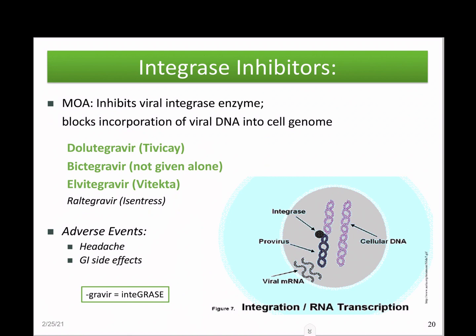Integrase inhibitors are perhaps the simplest drug class — they inhibit the viral integrase enzyme that clips the ends of viral DNA and inserts it into human genomic DNA. Without incorporation into the cell genome, there's no replication of viral RNA or DNA and therefore no viral replication. Key drugs include dolutegravir, bictegravir, and elvitegravir. These don't have severe adverse effects. Naming tip: look for '-gravir' in the drug name.